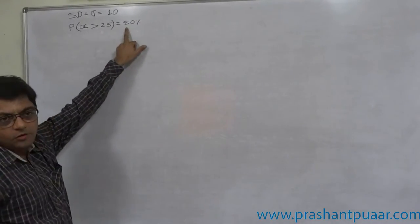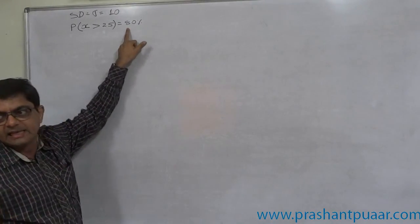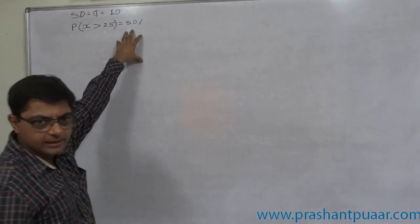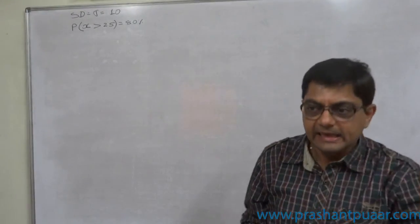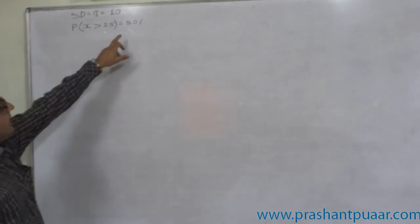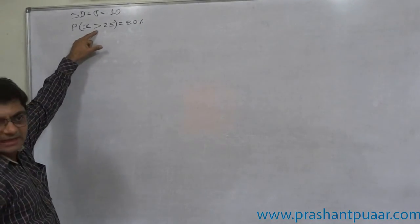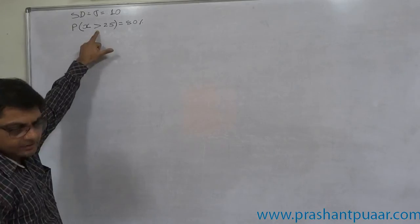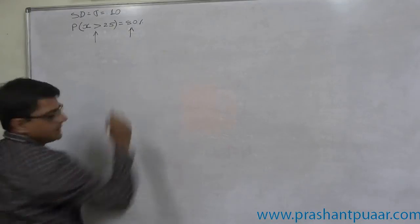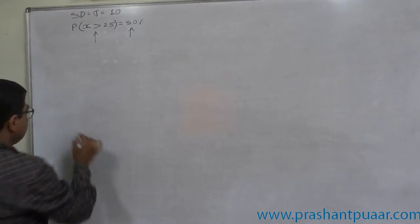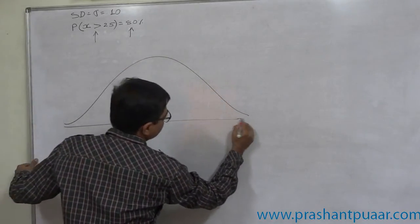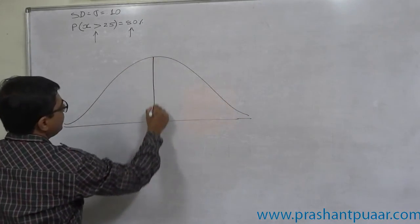The percentage or probability given is greater than 0.5. If the readily available probability from the data is greater than 0.5 and the sign with x is greater than, this sign is greater than and the probability is greater than 0.5, that means the value of x falls on the left-hand side area. Then only it is possible.